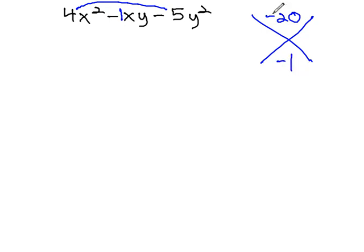A little bit of work with this pair, and we find out that negative 5 times positive 4 equals negative 20, and adds to the negative 1 we're looking for.